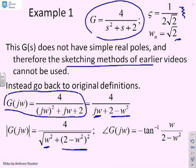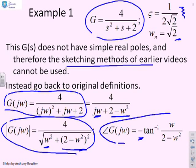If we look at the phase, we have minus tan inverse of ω over 2 minus ω squared, the minus being because the complex number is in the denominator. We can write expressions for gain and phase if we have a quadratic factor, but they may not be particularly insightful.